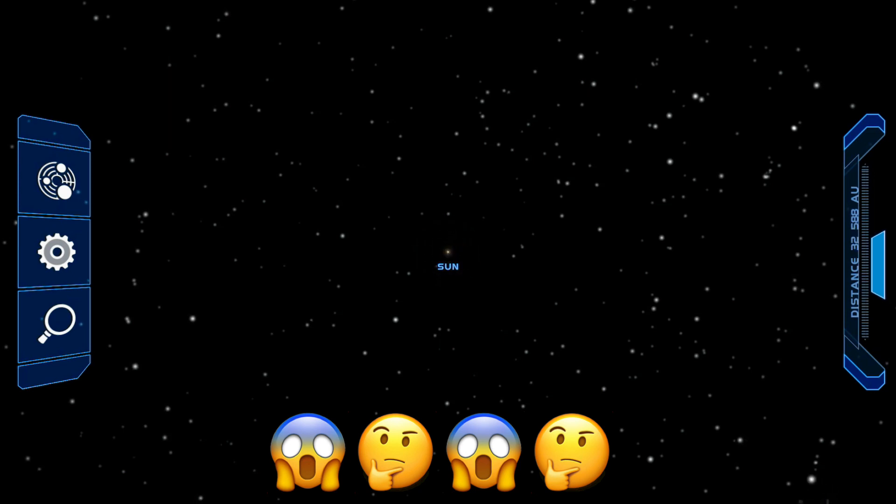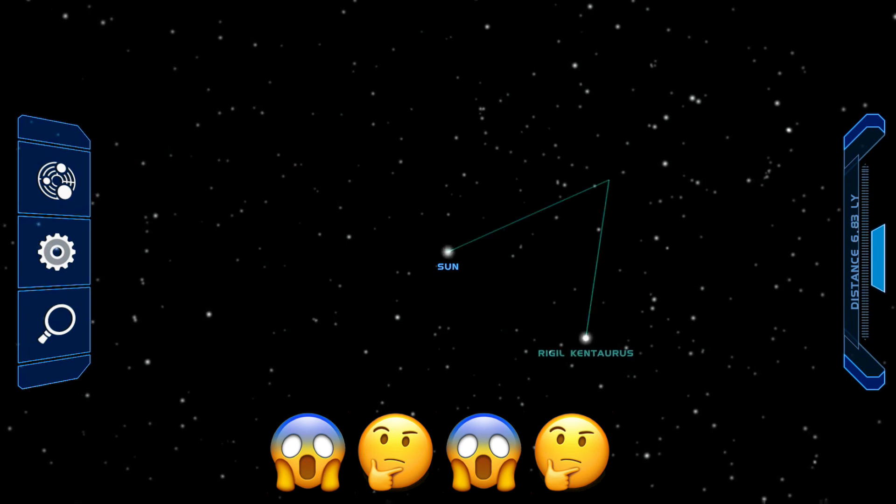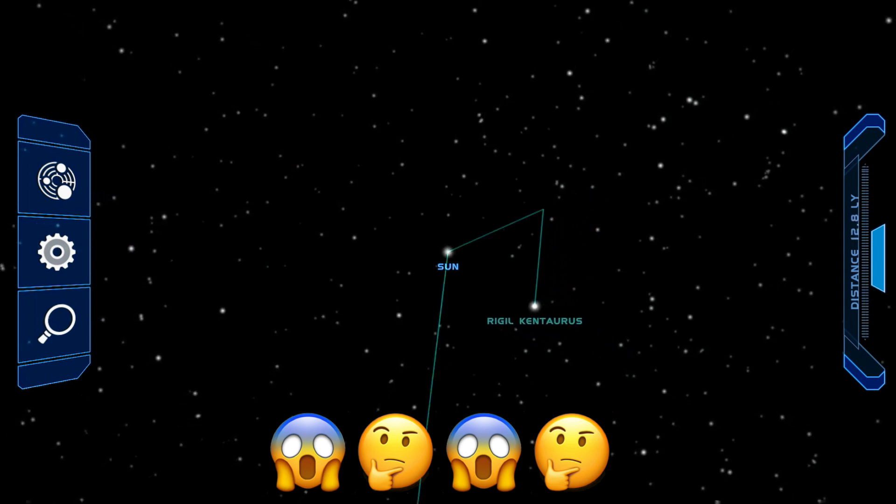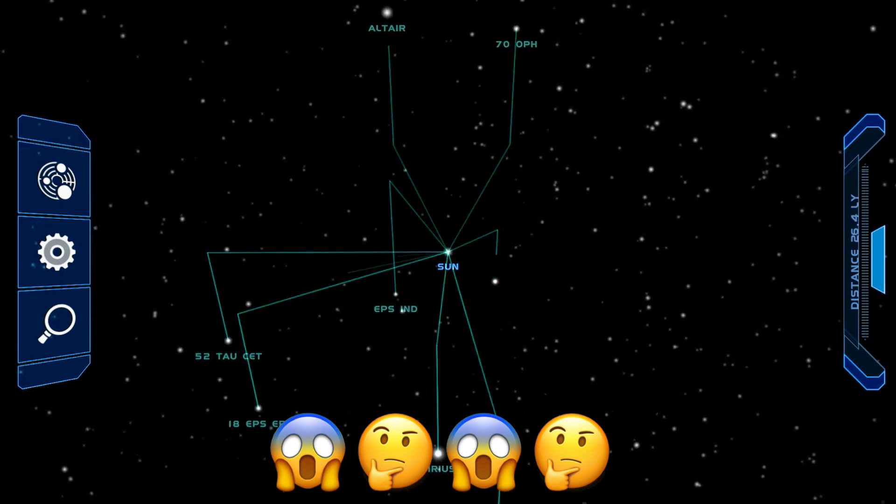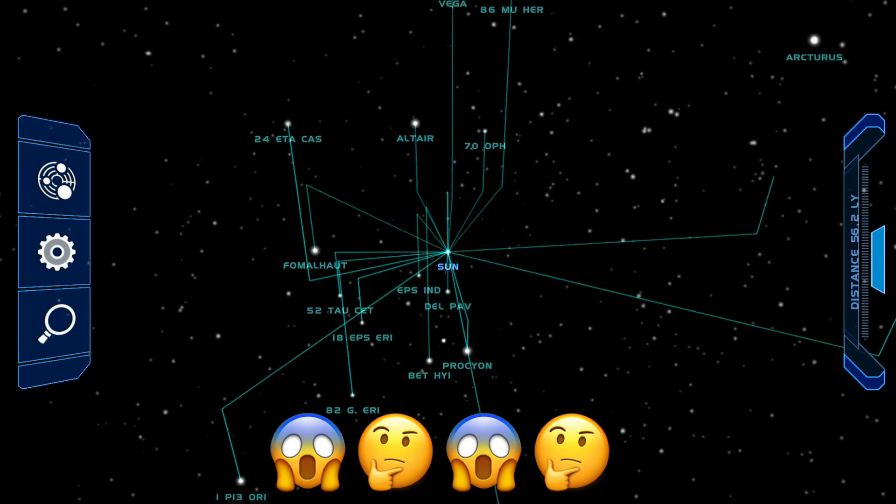Look at our sun - it looks like a dot. These are some other stars like Rigel, Canopus, Epsilon, and many more stars right here.